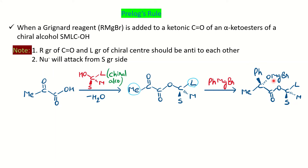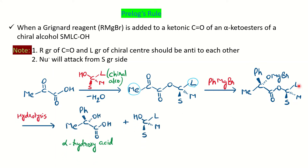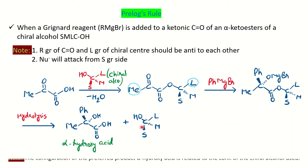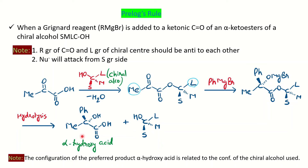After hydrolysis, the MgBr group converts to OH (alcohol), and finally the molecule breaks down into the acid (alpha-hydroxy acid) and the regenerated chiral alcohol. The stereochemistry of the alpha-hydroxy acid is governed by the stereochemistry of the chiral alcohol — this is what Prelog's rule is about. This is the major compound; a minor stereoisomeric product will also be present, so the reaction is stereoselective.